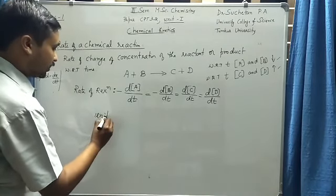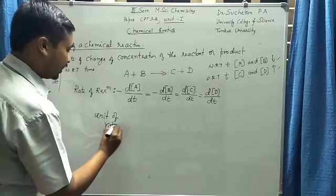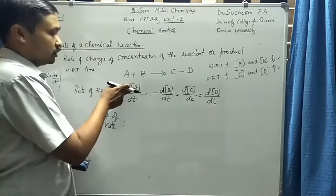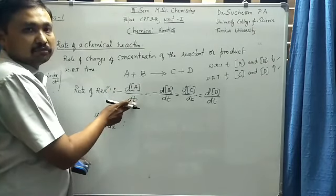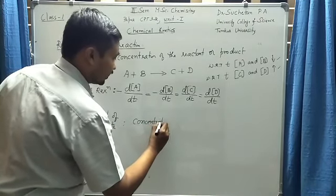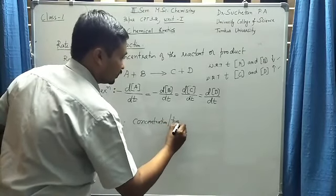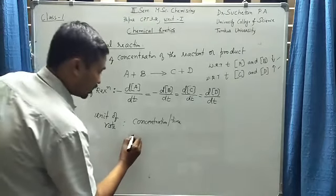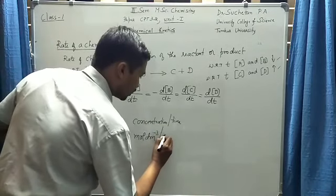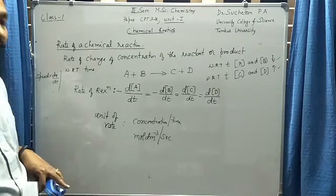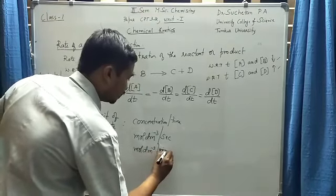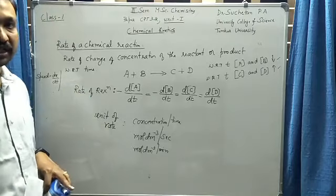What is the unit of rate of a reaction? Looking at any of these expressions, the numerator has a concentration term and the denominator has time. So the unit of rate is concentration per time. Generally, concentrations are expressed in mol per dm³ and time in seconds. So the unit is mol per dm³ per second, or it can also be mol per dm³ per minute.